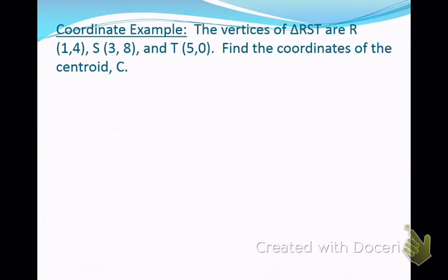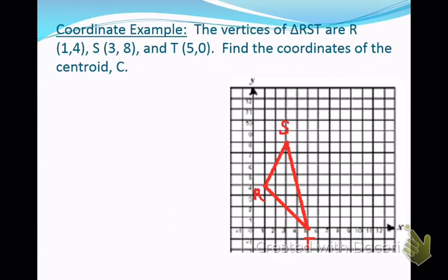If we have a triangle and we want to find out where the centroid is, we could put the triangle in the coordinate plane so that the vertices have coordinates. For example, triangle RST can be put into the coordinate plane where the coordinates for R are (1, 4), for S are (3, 8), and for T are (5, 0). We can use that to help us find the coordinates of the centroid.